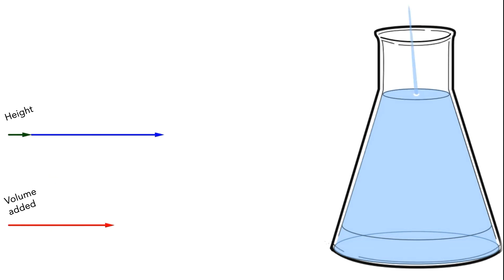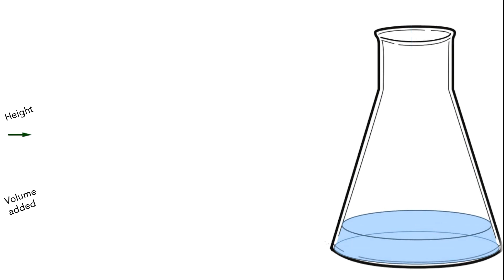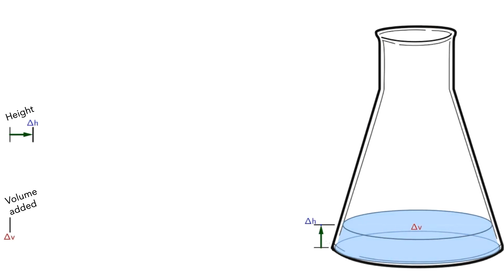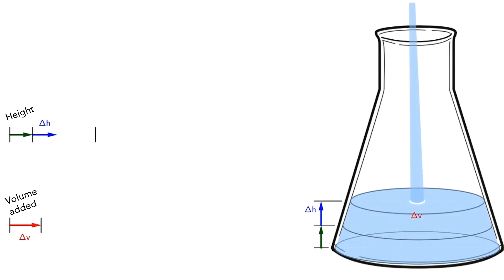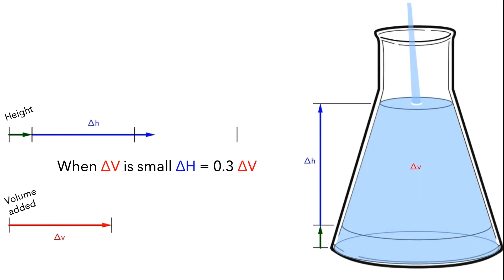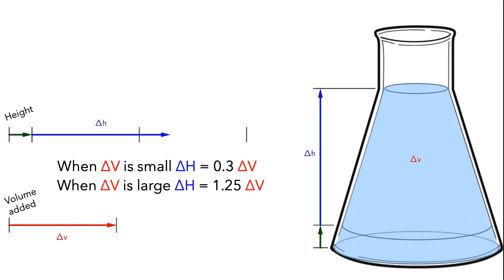Let's rewind the animation, and next I'll add in the green arrow to show the initial amount of water in the flask, and I'll also add labels for delta V and delta H. Let's start the animation again, this time incorporating the black bars to show the amount of change in volume. At first, when the amount of change in volume is small, the amount of change in height was only about 3 tenths as large as the amount of change in volume. Later, when the amount of change in volume is large, the amount of change in height was about 1.25 times as large as the amount of change in volume.